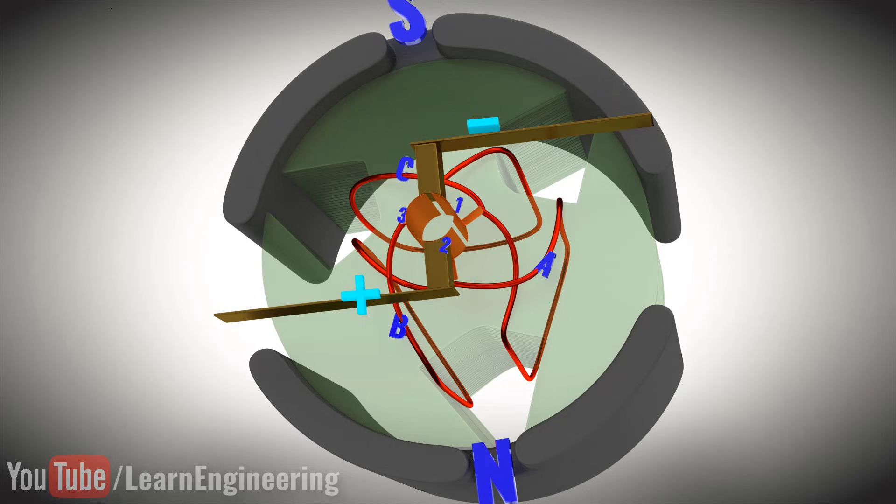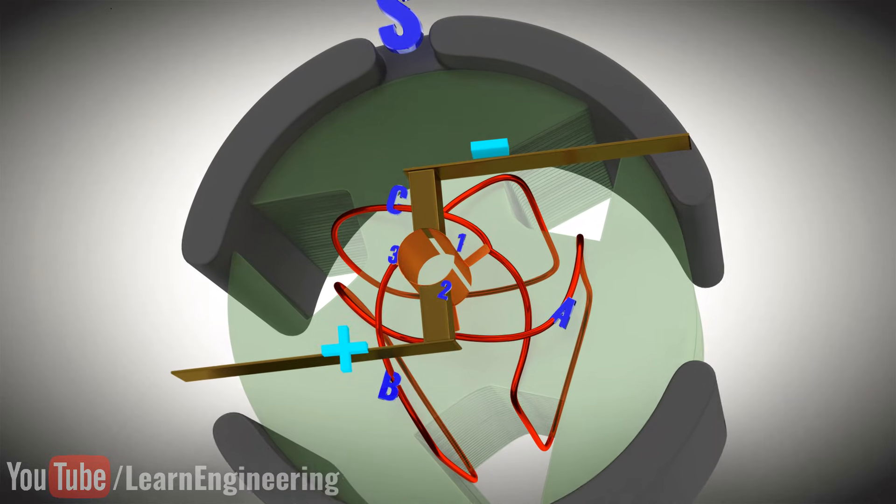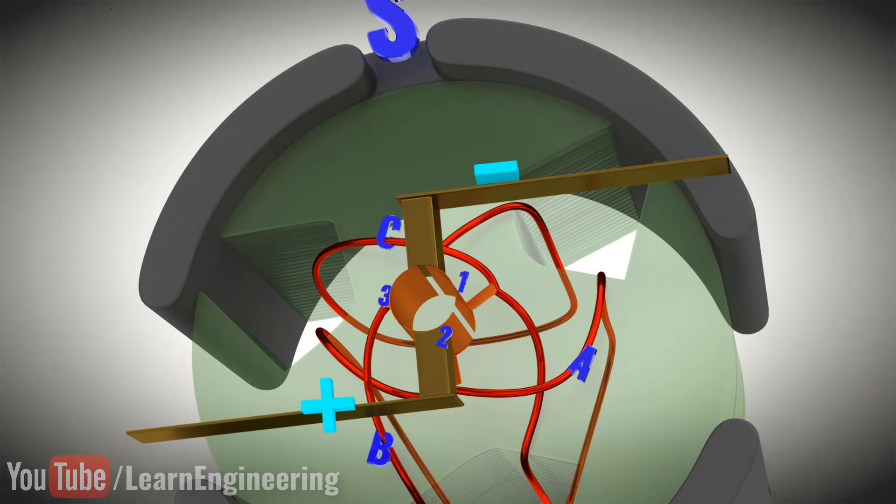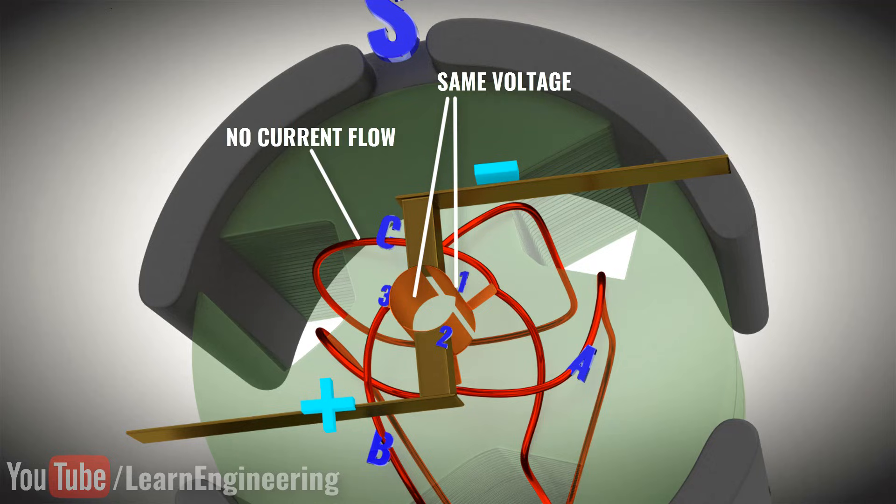Let's see what happens in this configuration. In the new configuration, the negative terminal is connected to commutator rings 1 and 3 together. So rings 1 and 3 possess the same voltage. Since coil C is connected between these rings, there will not be any current flow through coil C.